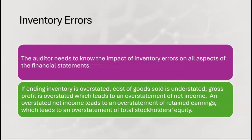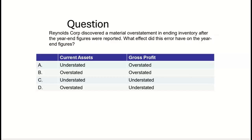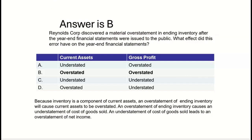Let's try this. Reynolds Corp discovered a material overstatement in ending inventory after the year-end figures were reported. What effect did this error have on the year-end figures? Ending inventory is overstated. It has an inverse relationship with cost of goods sold, so cost of goods sold is understated, and gross profit is overstated. Ending inventory is also a current asset, so if ending inventory is overstated, current assets are overstated.